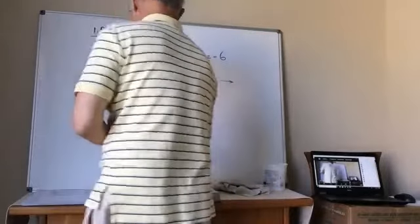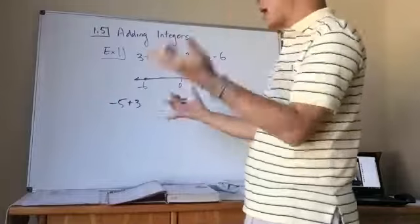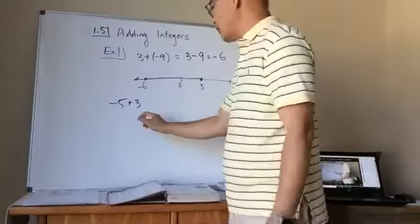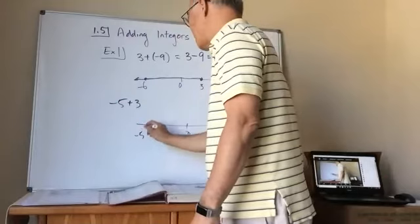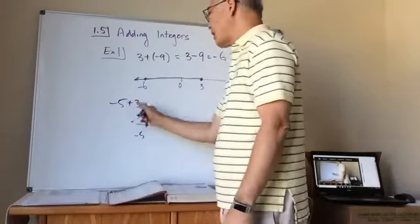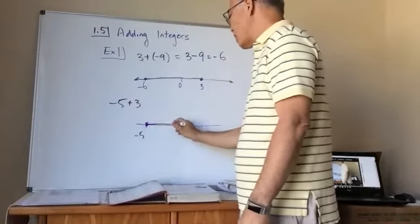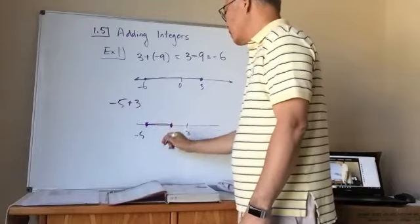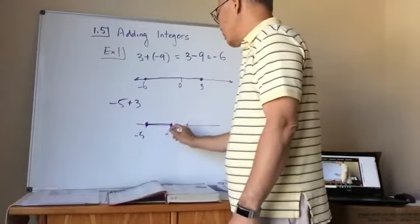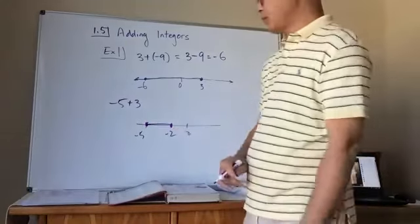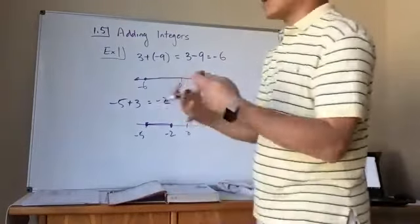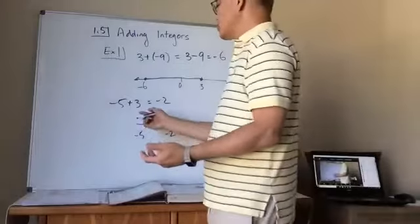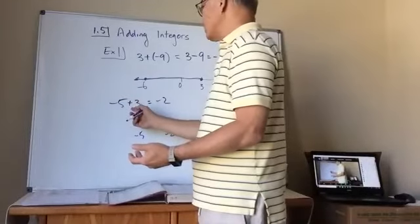The second one is negative 5 plus 3. We're adding a positive 3, so we go to the right. Starting at negative 5 and adding 3 to the right, we end up at negative 2.